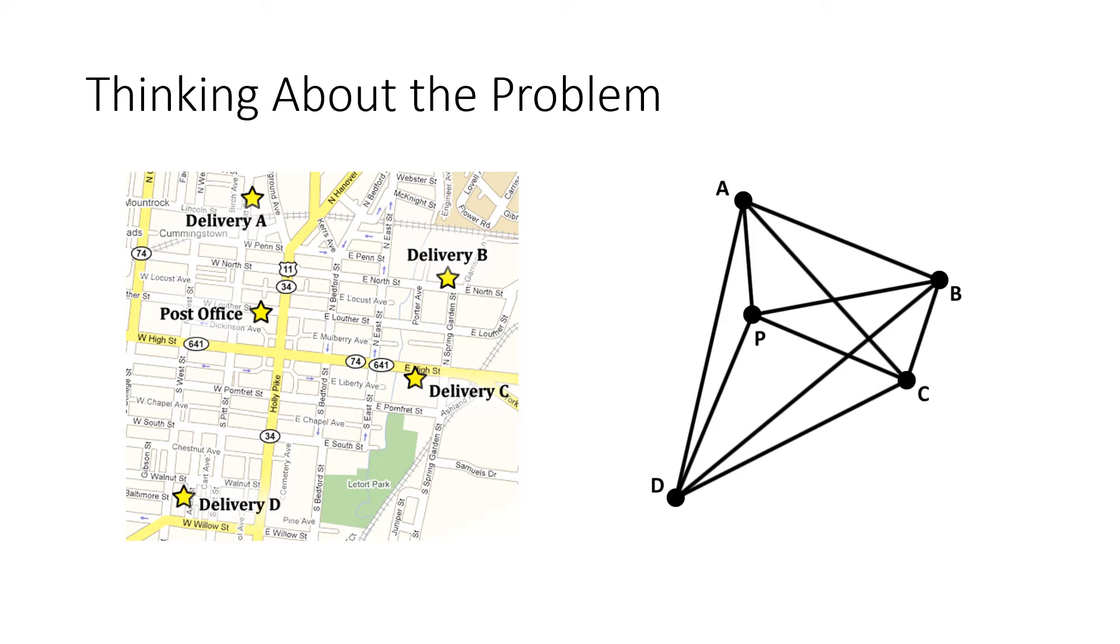An Euler circuit would mean that we're walking up and down every single street, up and down and back and forth, and covering every street until we get back to our starting point. Is that what we want to do here? Well, not really.